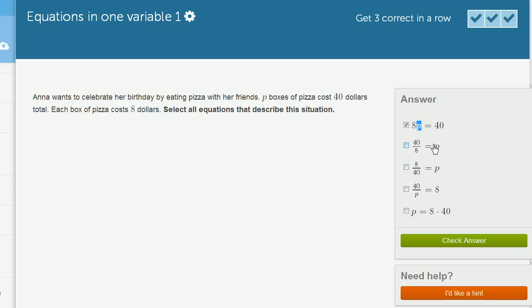Now anything else that I select really has to be the same thing as this first equation, just manipulated a little bit. Over here I have 40 divided by 8 is P. There's a couple of ways to think about it. If I take the total amount that I spend on pizza, $40, and I divide by the cost per box, so if I divide by 8, that should give me the number of boxes. And that's what this is saying. Take my total cost, divide by my cost per box, and it should give me the number of boxes.